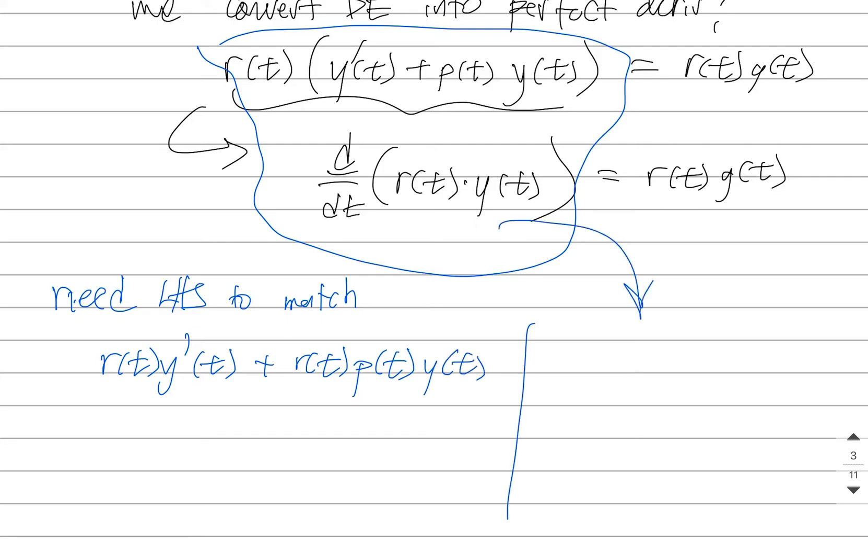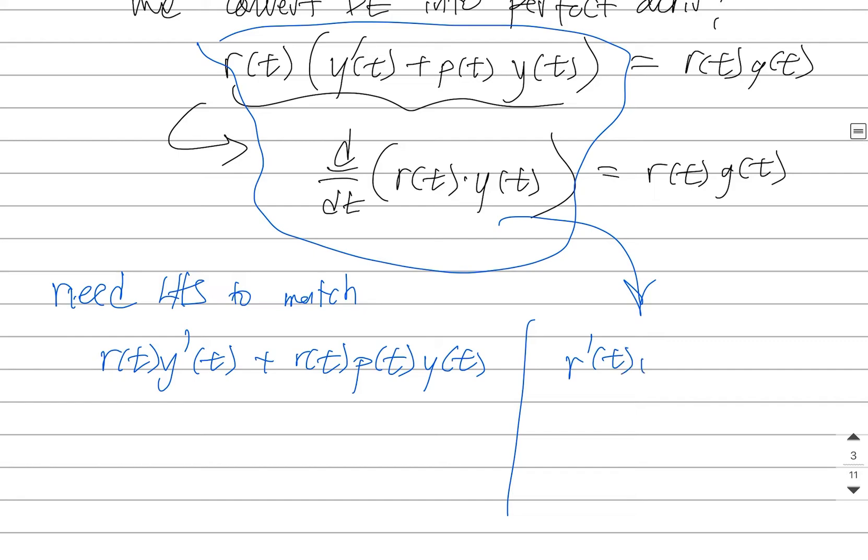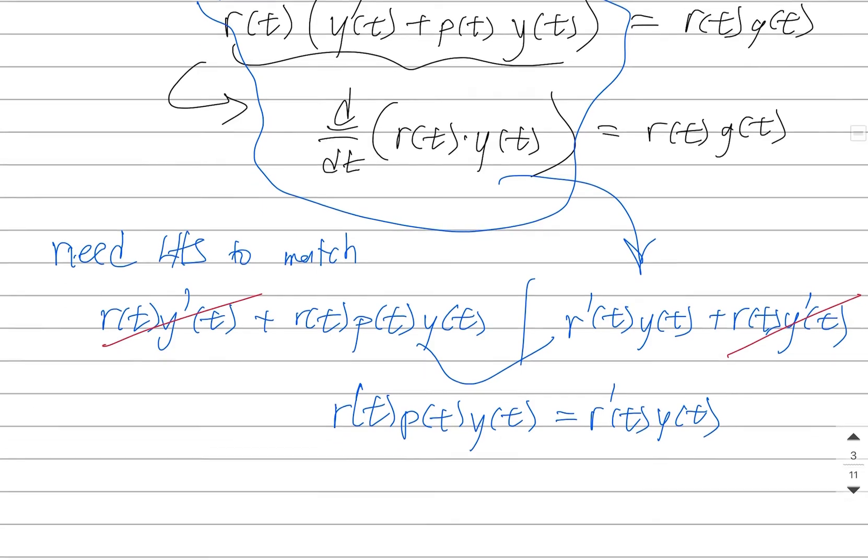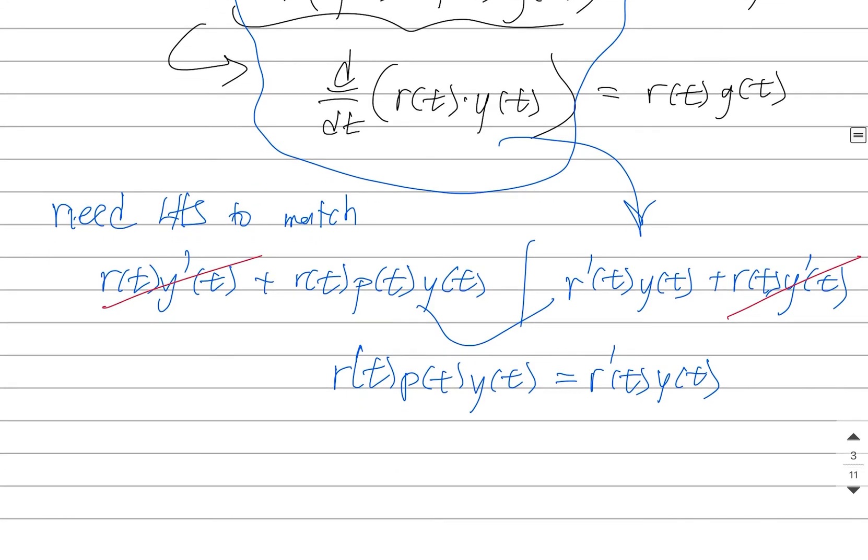From the product rule, I'll have r'(t)y(t) + r(t)y'(t). Well, these two terms are common, so I can get rid of those. The only way these are going to be the same is if I have r(t)P(t)y(t) = r'(t)y(t). And there's a y that's common, so I can kind of get rid of that.